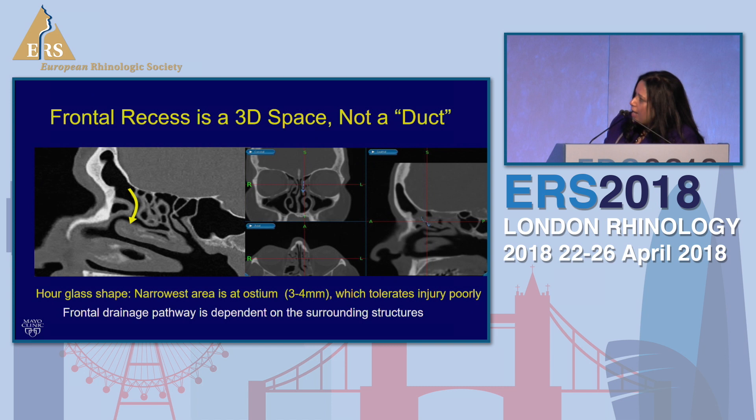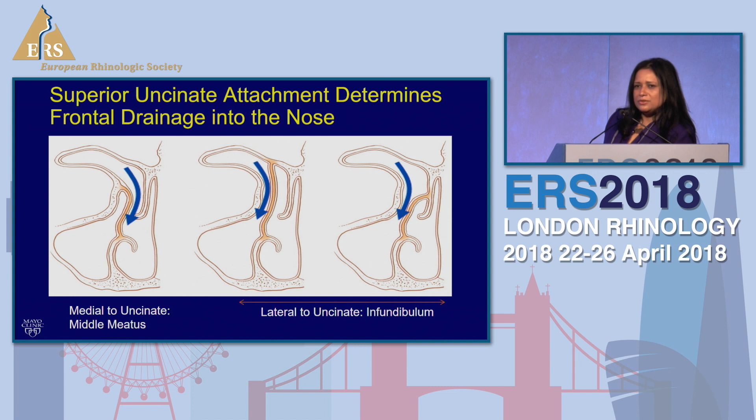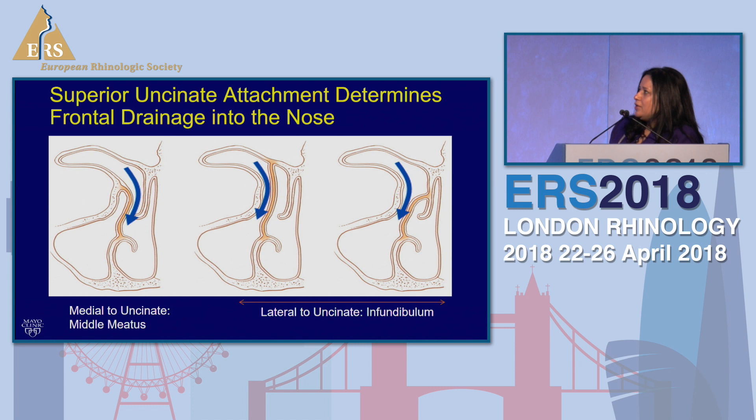What we understand from the sagittal view is that it is the removal of surrounding structures that will widen the frontal sinus recess — there is not a duct that will dilate or widen. This cartoon shows the importance of understanding how the uncinate process affects the drainage pathway of the frontal sinus. There are two spaces that are important: the infundibulum and the middle meatus.